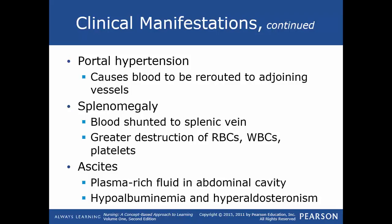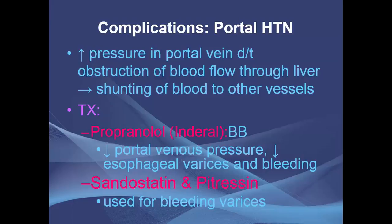Ascites is the accumulation of plasma-rich fluid in the abdominal cavity. Hypoalbuminemia causes fluid to escape into the extravascular compartments, while hyperaldosteronism causes sodium and water retention, contributing to ascites and generalized edema. Treatment includes propranolol, a beta blocker, to help decrease portal venous pressure and decrease esophageal varices and bleeding. Sandostatin is also used to help with bleeding varices.